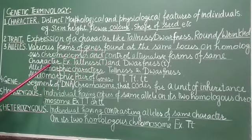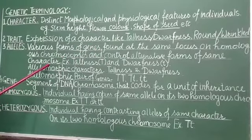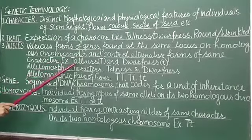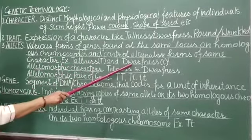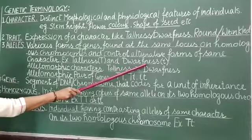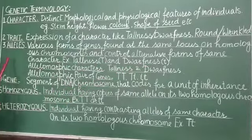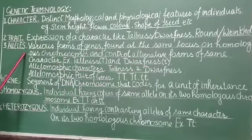For example, suppose if height is a character in consideration, then the two alleles are tallness which is represented by capital T and dwarfness represented as small t.